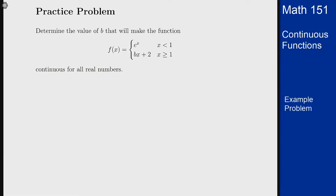In this example, we want to find the value of b that will make the following function continuous. It is the function e to the x for x less than 1, and the function bx plus 2 for x greater than or equal to 1.